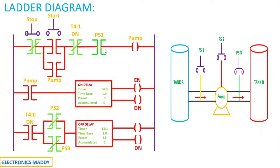Once I press the start push button, the contact gets energized. If you carefully observe, the entire contact in this rung is energized, hence the rung gets energized and the current starts flowing — the pump is now energized. Since the pump is energized, according to the concept of latching, the same address is used in the parallel rung as well, and that is why even this contact gets energized.